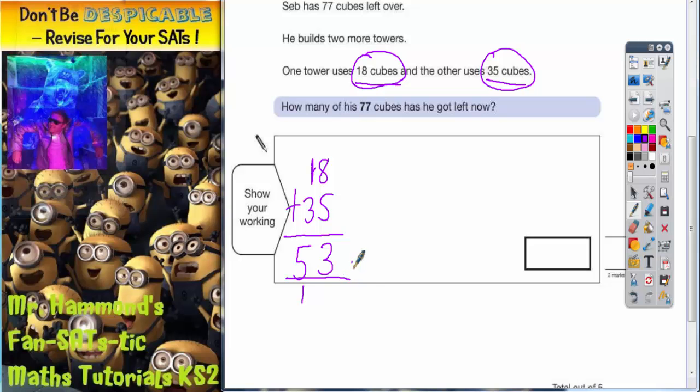So you're using 53 more cubes from the 77 cubes. So if we start with 77 cubes and subtract these 53 cubes here, whatever's left will be how many you've got left now.